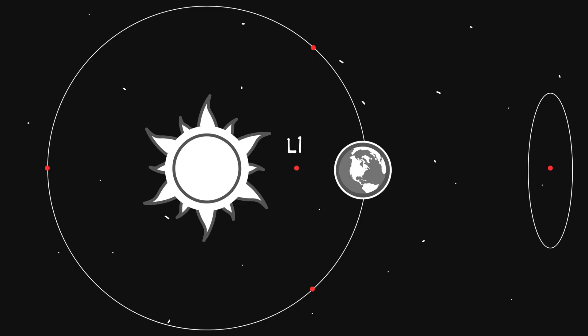L1 is between Earth and the sun. L2 is behind Earth. L3 hides on the far side of the sun. L4 and L5 make a triangle shape with Earth and the sun.